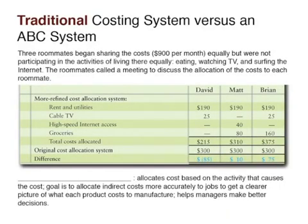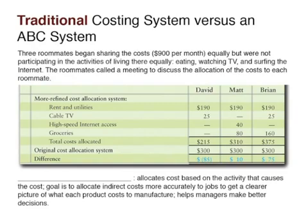We have three roommates — David, Matt, and Brian — and they're currently sharing all the cost of living together equally at $900 per month. But they're not all participating in the activities of living together equally, like eating, watching TV, and using the internet. Some are not using any of the activity but yet they're getting charged for those activities, so it's probably not a fair way to do this.